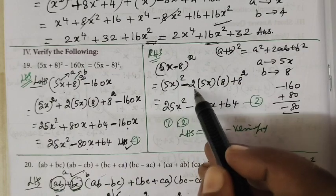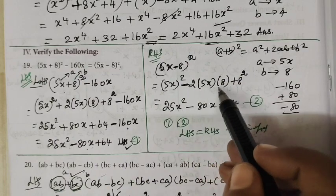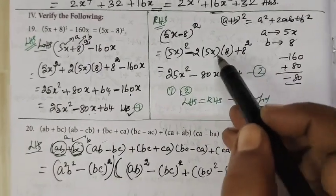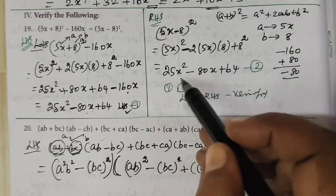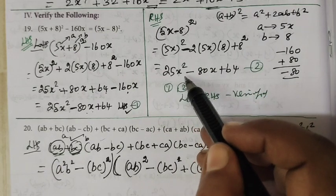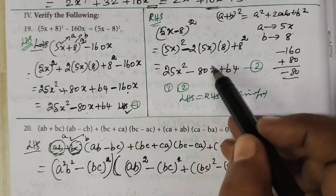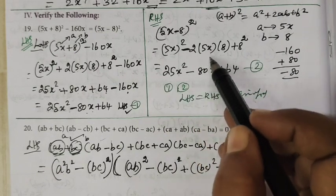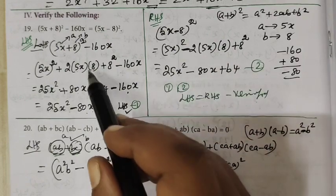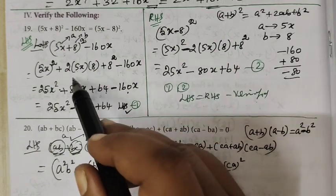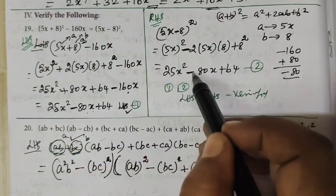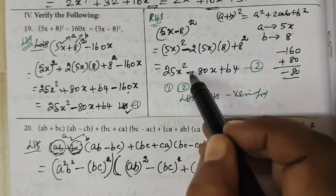So (a − b)² = a² − 2ab + b². 5² = 25, so 25x² − 80x. In the LHS case it was plus 80x, but here it is minus. So LHS = RHS.